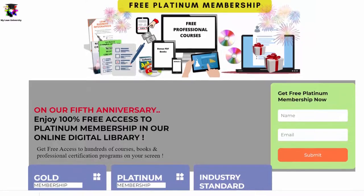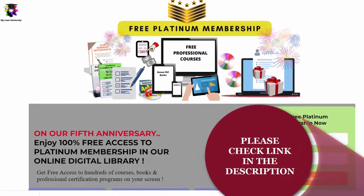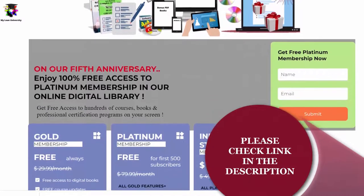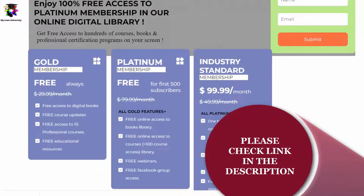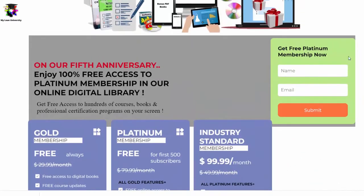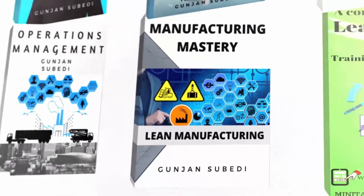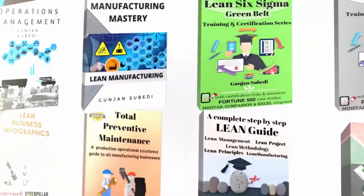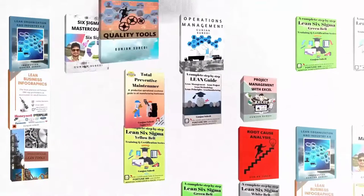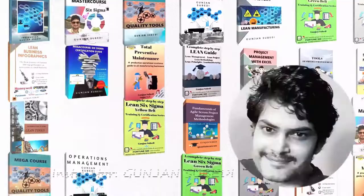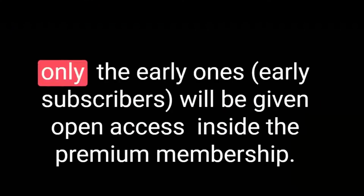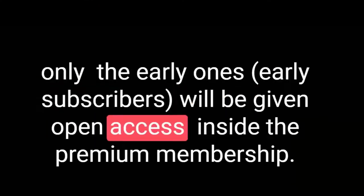Before ending this lecture, let me remind you to join My Lean University's premium membership and enjoy total free access for limited time inside My Lean University's online library and get tons of free courses, free books and lecture topics on Project Management, Lean and Six Sigma, Operations and Supply Chain, Productive and Preventive Maintenance, Quality Maintenance, Data Science, Industry and Sales Management, Agile and Scrum, Kaizen or Continuous Improvement and much more totally free. No strings attached. As we have limited seats, only the early subscribers will be given open access inside the premium membership.